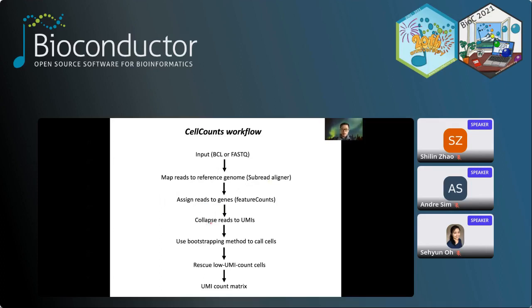After the assignment, it will collapse reads mapped to the same location into UMIs. After that, it uses a bootstrapping approach to call cells — to determine a UMI threshold to call valid cells. It also has a cell rescuing procedure, which allows cells whose total UMI counts are lower than the threshold but found not to be from ambient RNA to be rescued. The function then returns a UMI count table that you can use for further analysis.